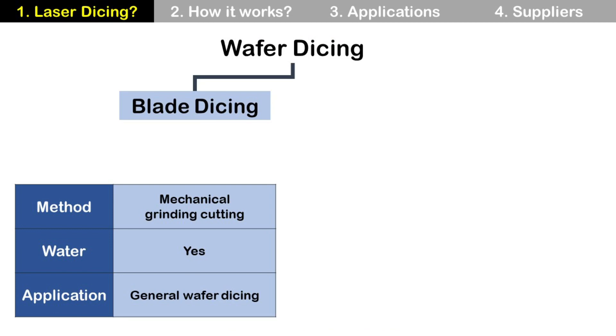In wafer dicing, there are four major methods: blade dicing, laser dicing using ablation, stealth dicing, and plasma dicing. By the way, wafer dicing and wafer sawing are the same thing.